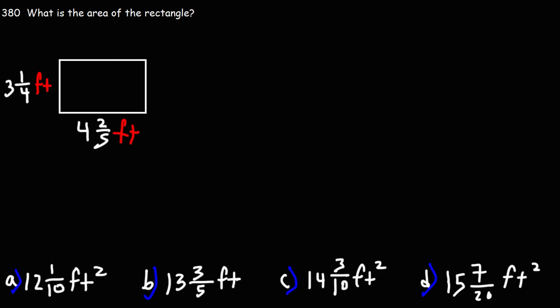Number 380. What is the area of the rectangle? We know that area is length times width, and the length is 4 and 2 fifths feet. The width is 3 and 1 fourth feet.